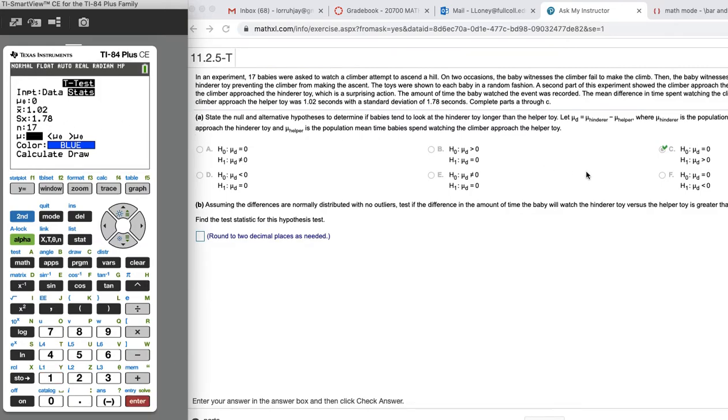And then we want to pick our alternative. You'll see your H1 mu d is greater than zero. So we'll choose the greater than option. And then we want to go down to calculate to get the p-value.